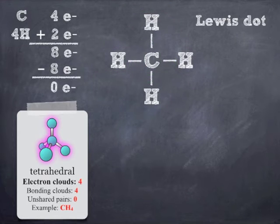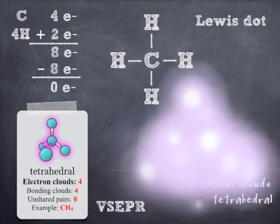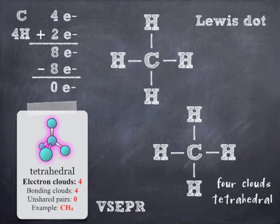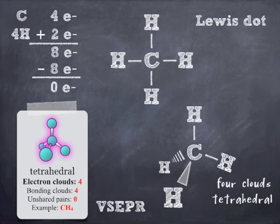And so, we have four clouds. And so, that gives us what's called a tetrahedral structure. Now, how do you draw a 3D structure on a piece of paper? It's easy. You use something called the wedge and the staircase. And I tell my students always, always, always, if you have four clouds, to draw a wedge and a staircase. The wedge represents the one coming out of the plane at you. And the staircase represents the one going back into the plane away from you.